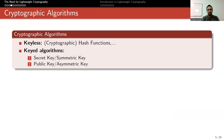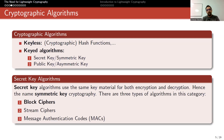Let me briefly explain what kinds of cryptographic algorithms we have. Some algorithms are keyless, like cryptographic hash functions. We also have keyed algorithms — in symmetric key cryptography we use secret keys for both encryption and decryption. In asymmetric or public key cryptography we generally have two keys: public and private. There are three types of symmetric algorithms: block ciphers, stream ciphers, and message authentication codes.